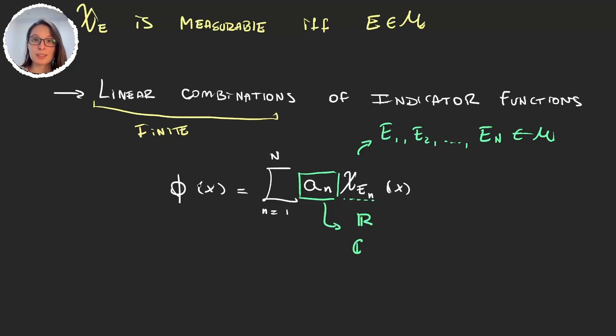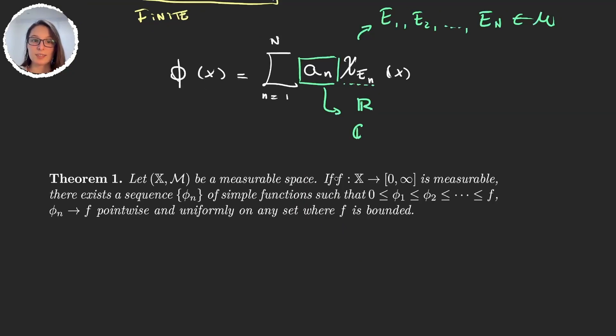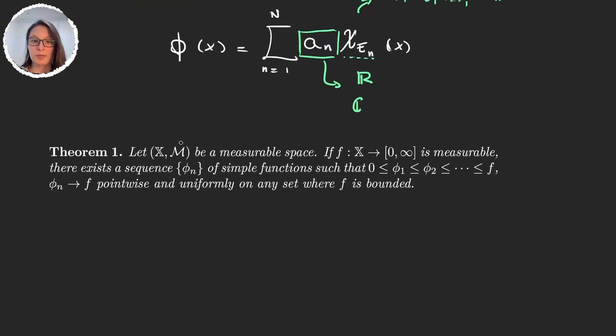But now why are these functions so important? I mean they're extremely simple. Well they're important because of this next theorem. This theorem says that we have a measurable space (X,M), so a set and a sigma algebra, a function that goes from that set to [0,∞), so it's a positive function.